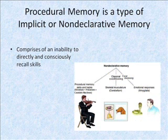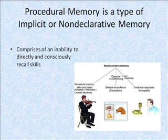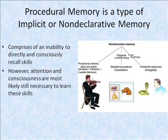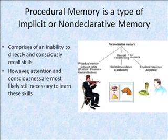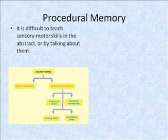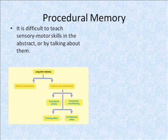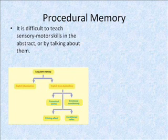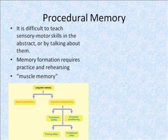As a type of implicit memory, procedural memory comprises an inability to directly and consciously recall skills. However, attention and consciousness are most likely still necessary to learn these skills. This brings up the idea that it is difficult to teach sensory motor skills in the abstract or by simply talking about them. As a result, the formation of procedural memories requires practice and rehearsing.